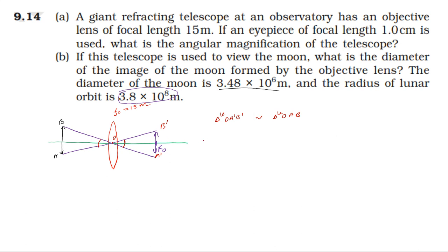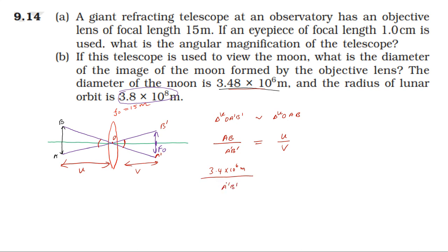Using similar triangles — vertically opposite angles are equal — the ratio of AB (moon diameter) to A'B' (image size) equals the object distance divided by the image distance. The moon diameter is 3.48 × 10⁶ meters, the object distance is 3.8 × 10⁸ meters, and the image distance equals the focal length of 15 meters.